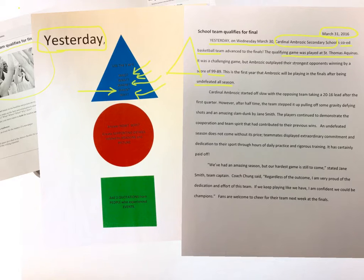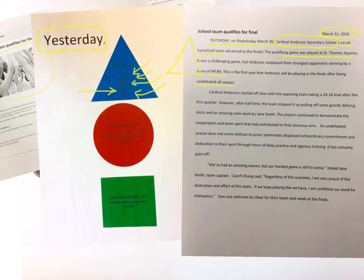Moving on to the second paragraph — here we're going to use a circle. In the circle, we want to think about how and why, but we want to go into more depth and be a little more creative about the supporting details. We want to make sure we relate to the headline and the picture. Cardinal Ambrosic started off slow, with the opposing team taking a 20–16 lead after the first quarter. Basketball is played in quarters — again, we refer back to the picture because we decided to choose the sport of basketball.